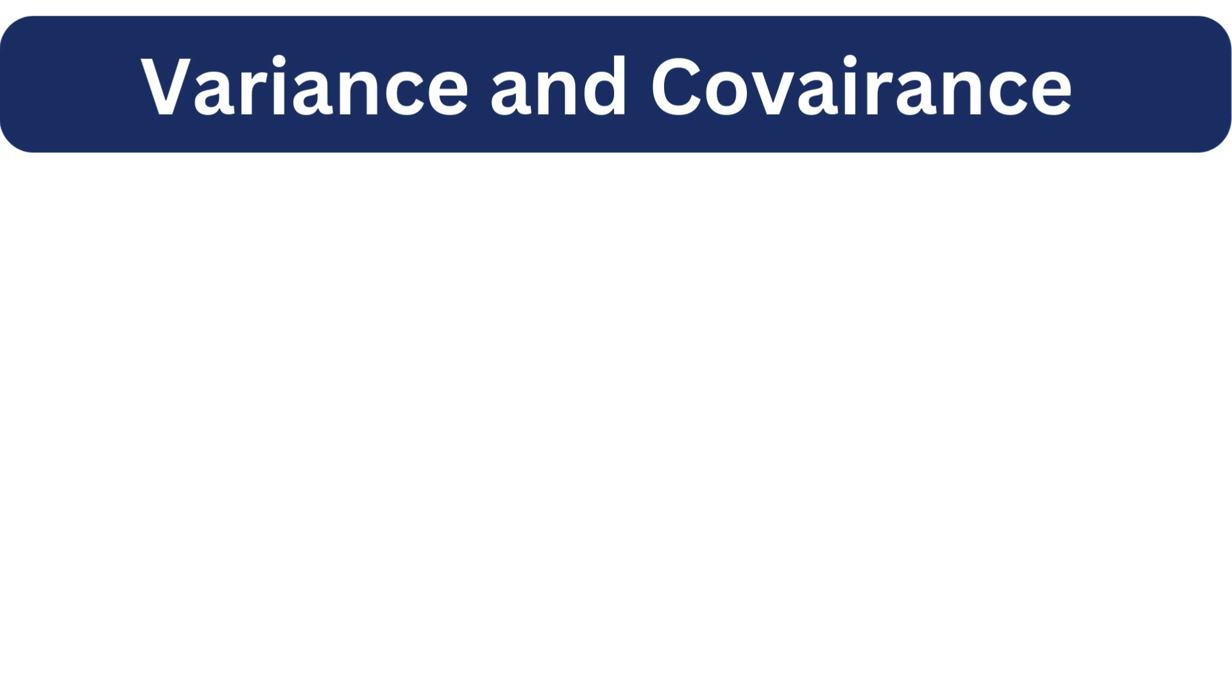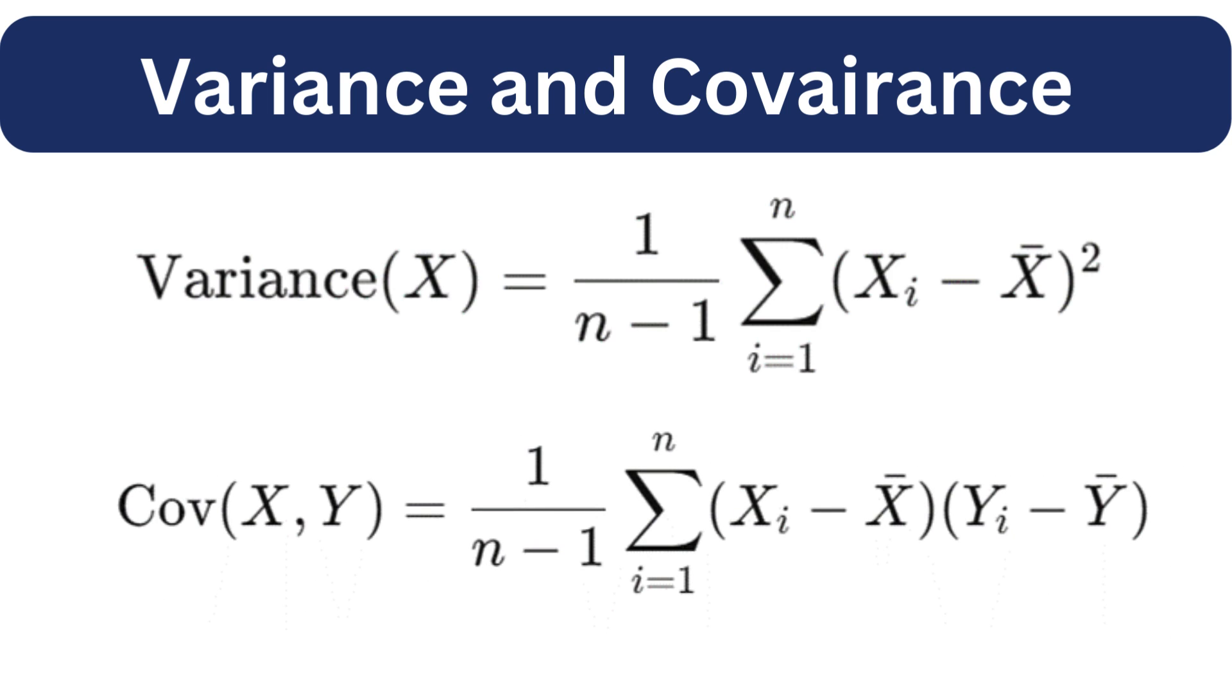Covariance, on the other hand, indicates the direction of the linear relationship between two variables. It tells us how two variables move together. The formula of covariance is similar to that of variance, but it incorporates two variables instead of one.